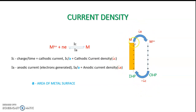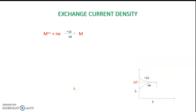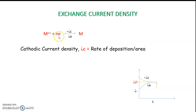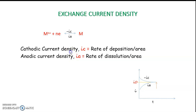You can see in this picture the anodic current density and the cathodic current density. I am giving a negative sign to I_C — it only represents that I_C is opposite to I_A; that is, it is not the magnitude, only the direction. The cathodic current density I_C is the rate of deposition per unit area, and I_A is the rate of dissolution of metal per unit area.